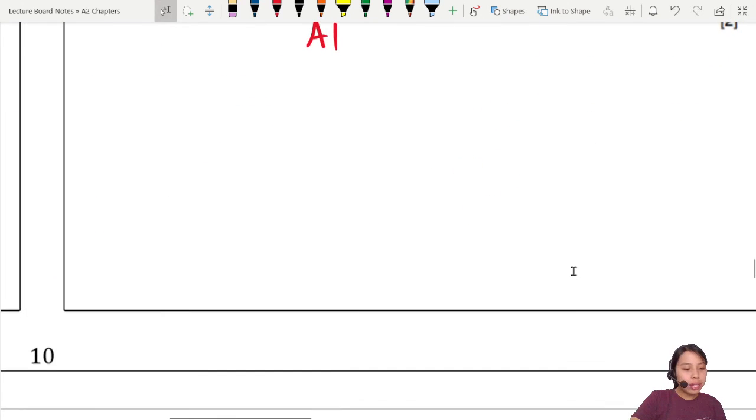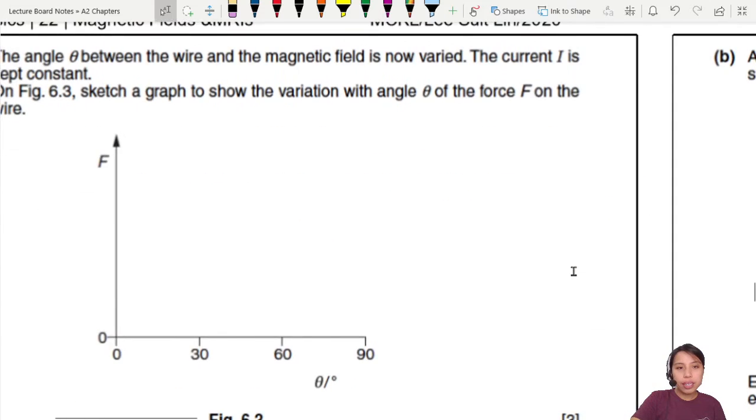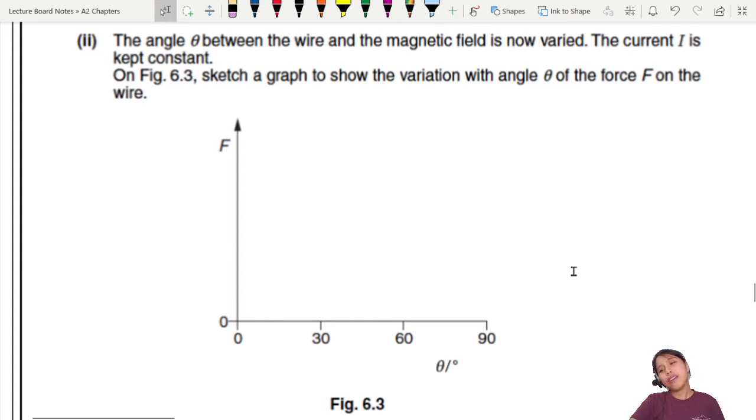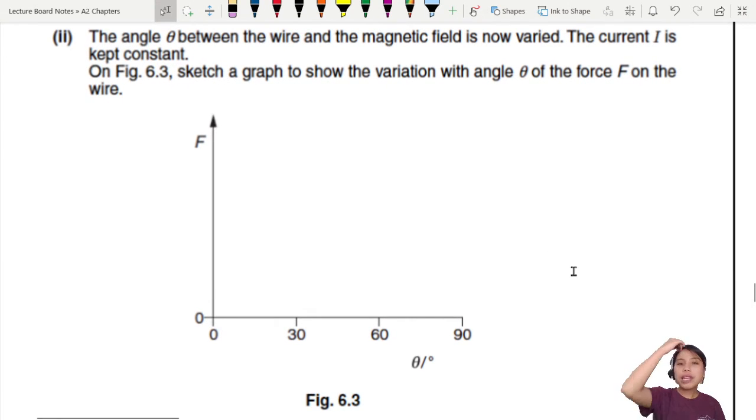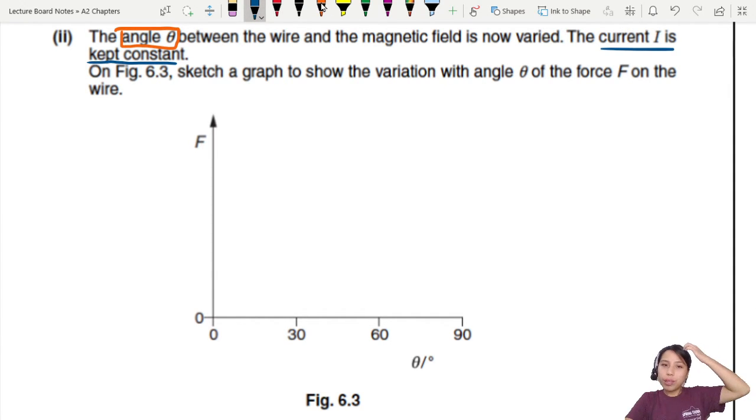Let's continue. Where is part two? Oh, another graph. Double graph. Now the angle between the wire is varied. So now we are changing θ, but the current is kept constant. So there's a little bit of change. You use the same equation again, BIL sin θ. What are we plotting now? F against θ.